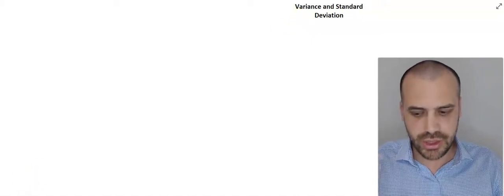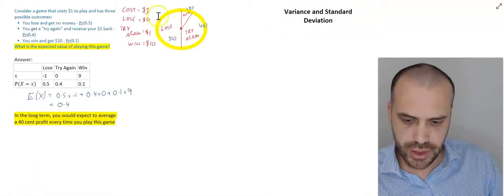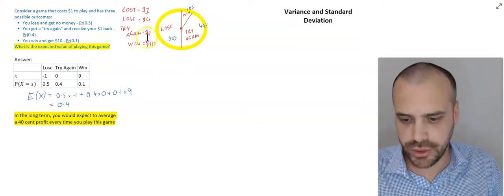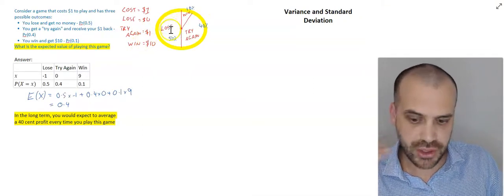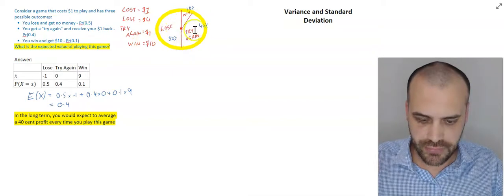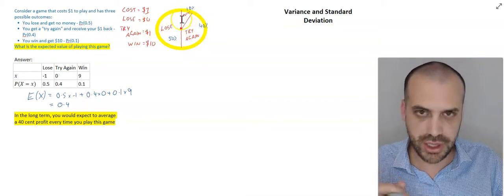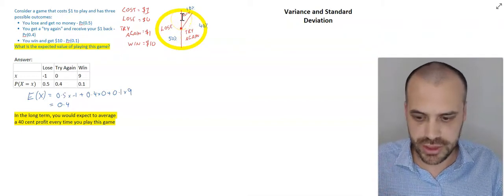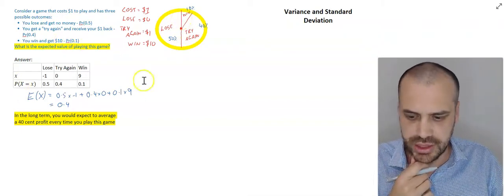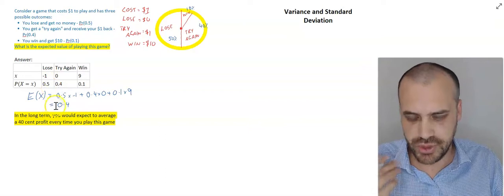So, I talked about a game. Let's revisit that game. What was this game here? You pay $1 to play, there's a 50% chance you lose and get no money. There's a 40% chance you get to try again, you get your dollar back. And there's a 10% chance that you win $10.